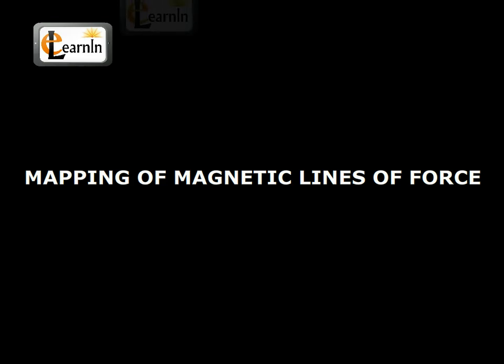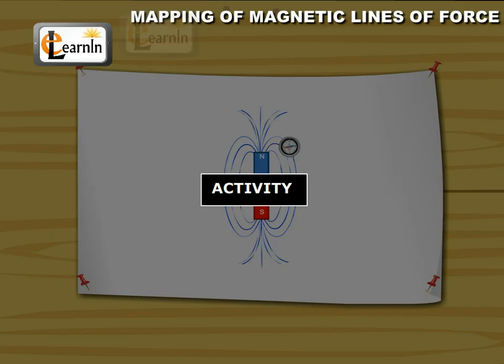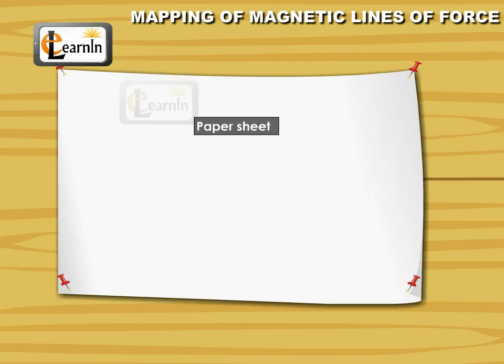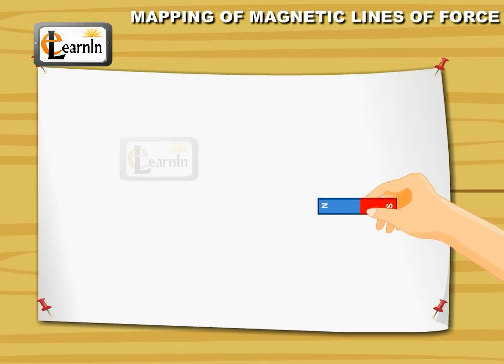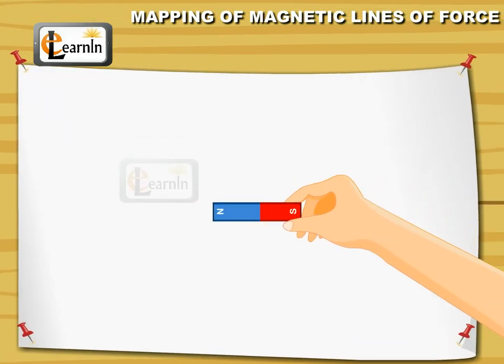Mapping of Magnetic Lines of Force. To map lines of force around a bar magnet, fix a sheet of paper to a drawing board. Place a bar magnet on the sheet of paper at its center.